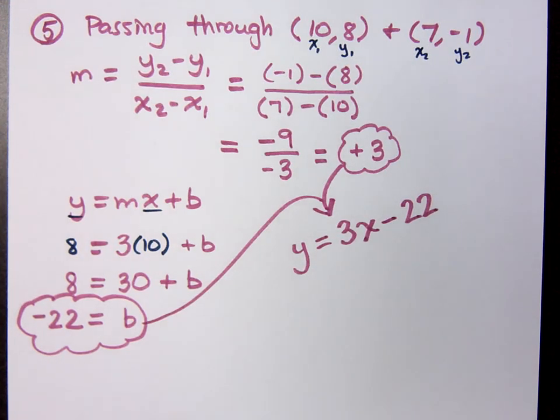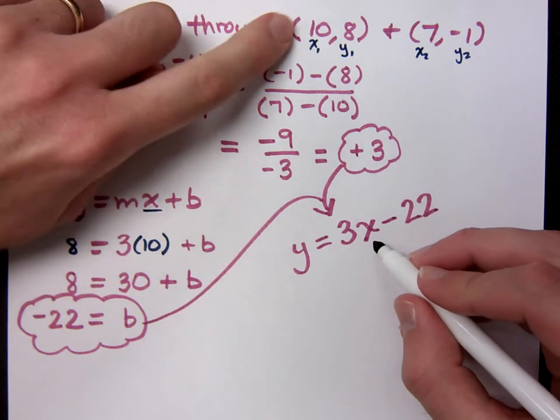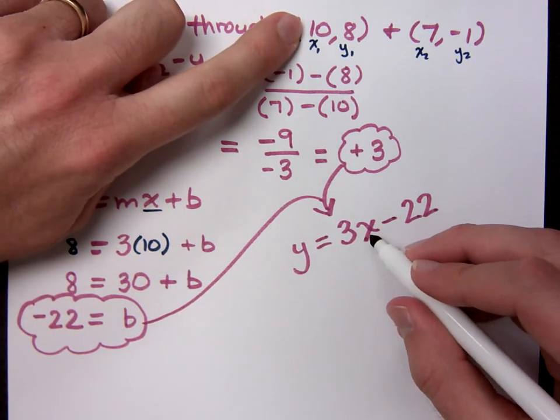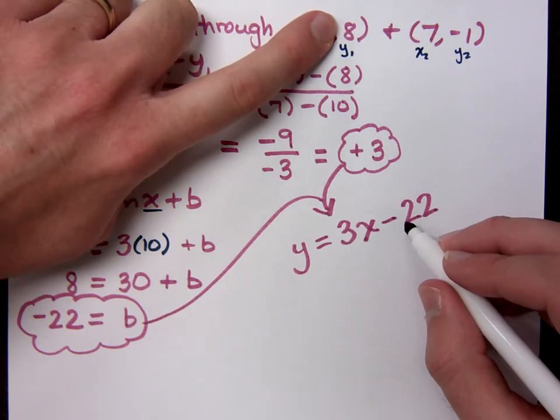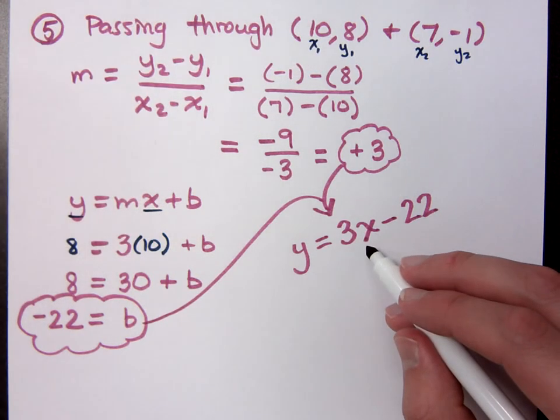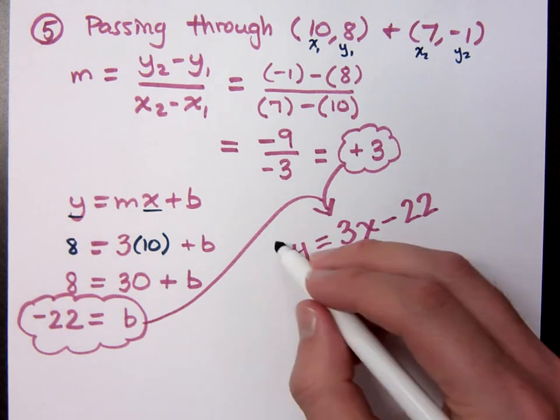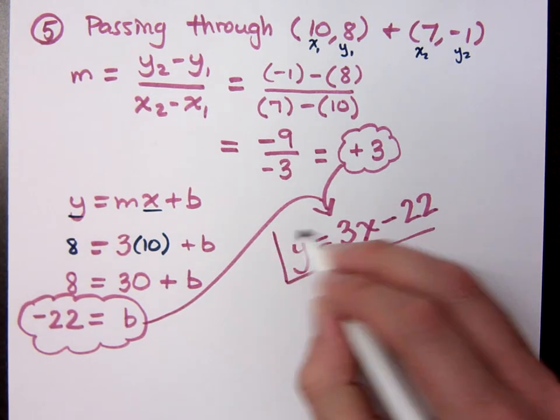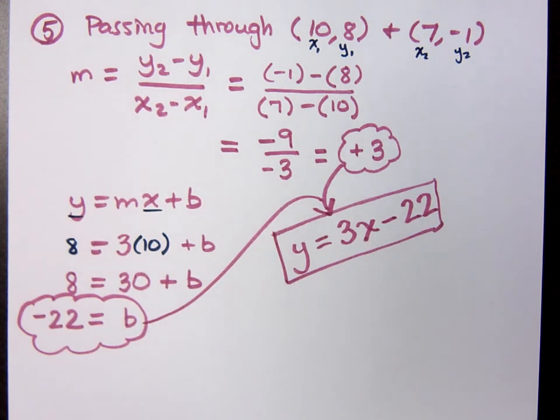Now before you go on, make sure that this checks out. If I plug in 10, 3 times 10 is 30. 30 minus 22 is 8. Plug in 7. 3 times 7 is 21. 21 minus 22 is negative 1. So both of those points check out. That's exactly what they're supposed to do. Questions about that?